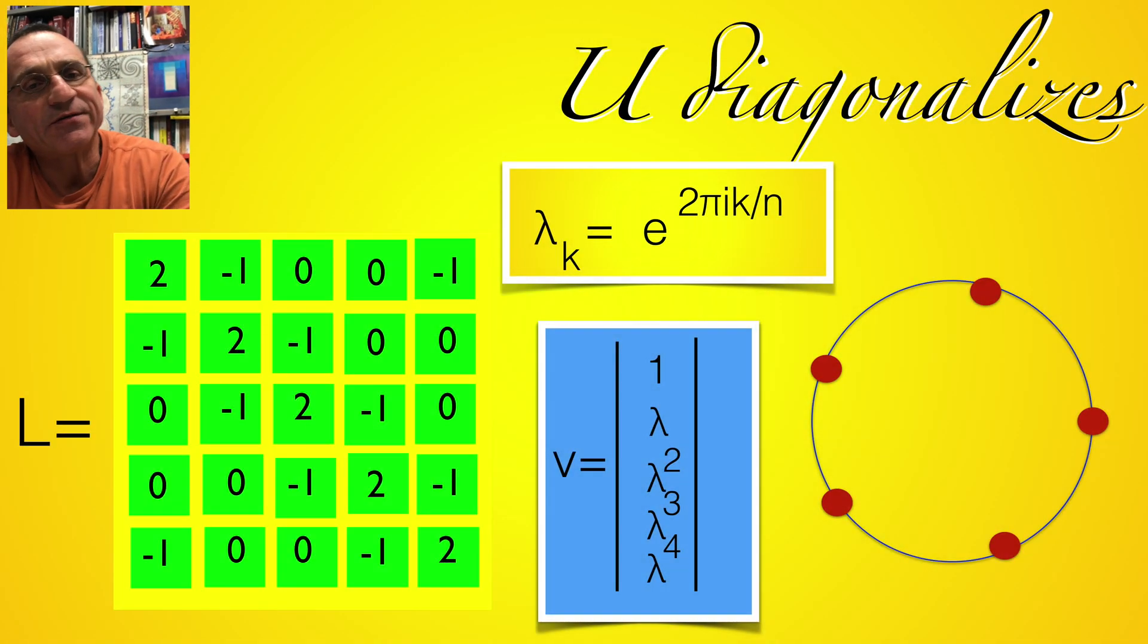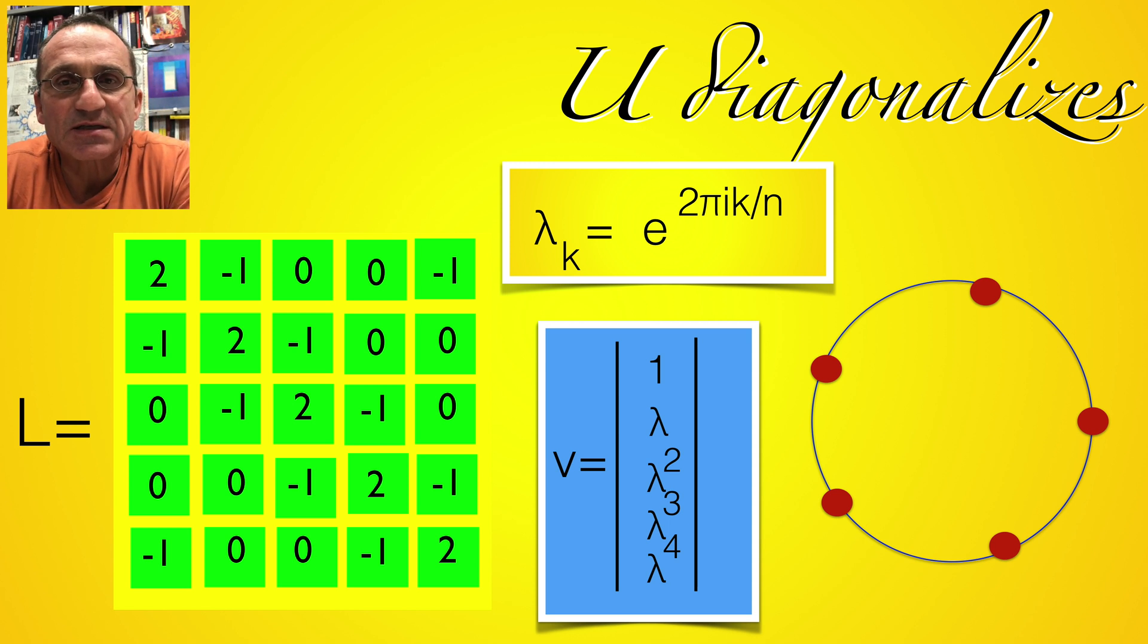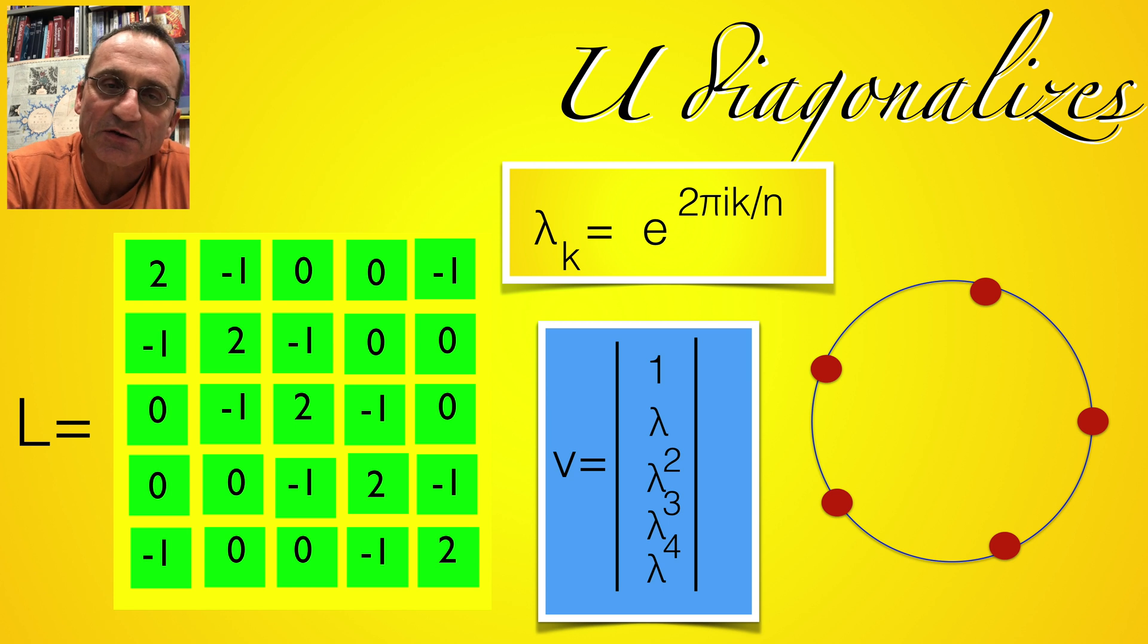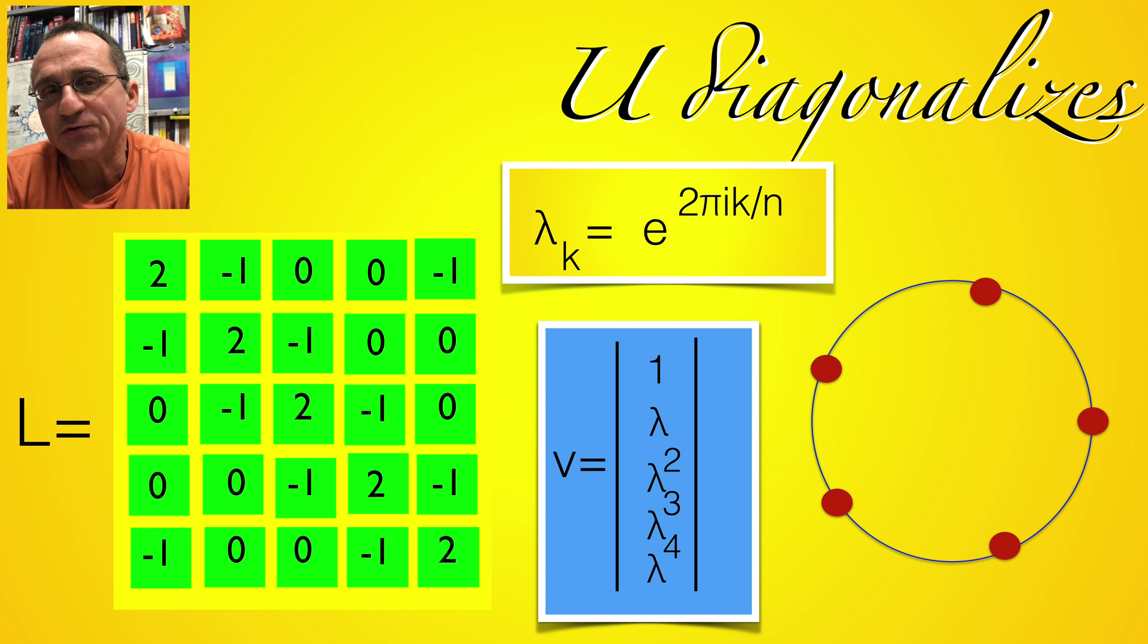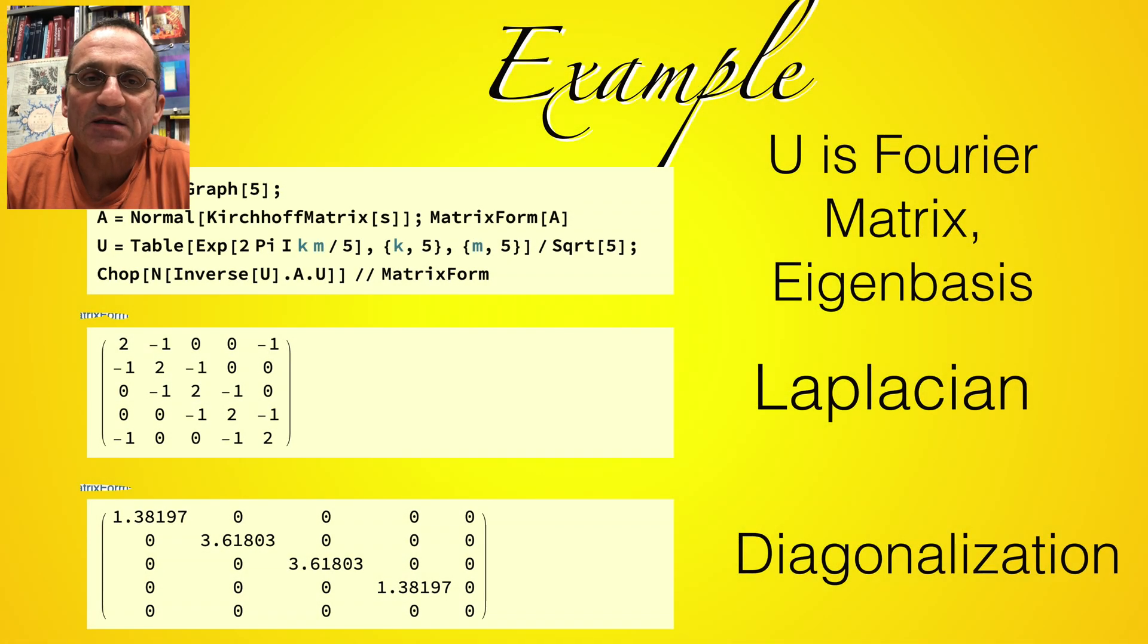And matrix u is useful for many things, like diagonalizing some matrices, band matrices for example. If you have a circular matrix or a complete circular graph or a complete graph, you find the Laplacian and you want to find the eigenvalues, and you use this Fourier theory to diagonalize the matrix.